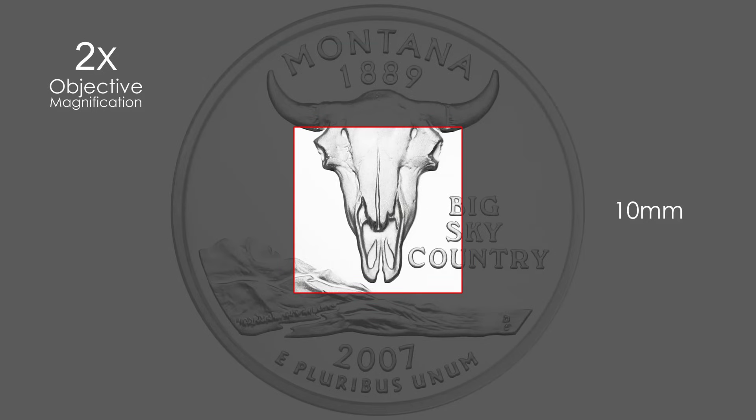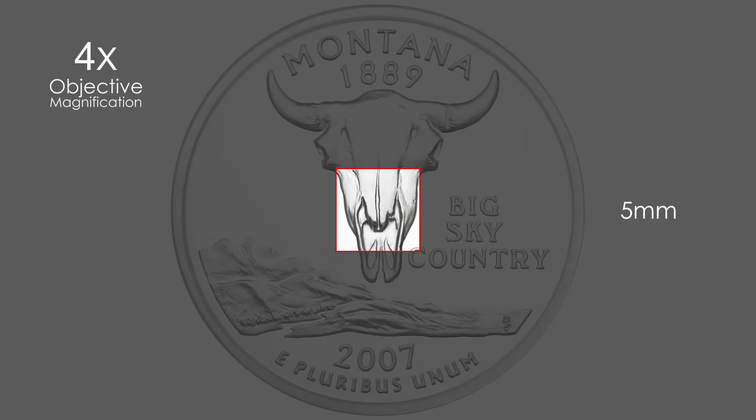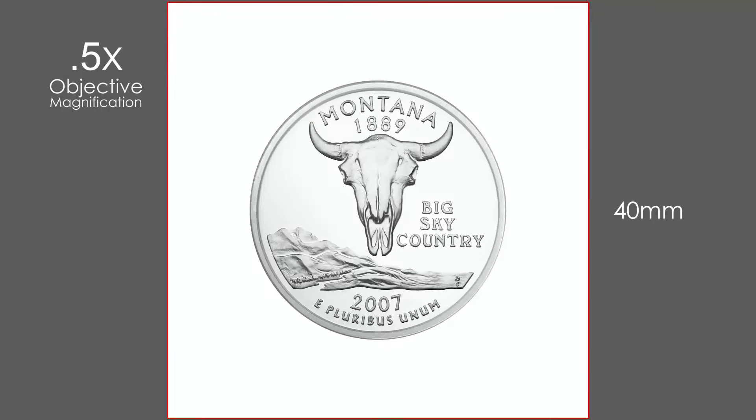At 2x magnification, the field of view is only 10 millimeters, showing a much smaller portion of the coin. And at 4x, it's only 5 millimeters. With a fractional magnification, such as .5x, the field of view is now 40 millimeters, which allows us to see the entire coin.